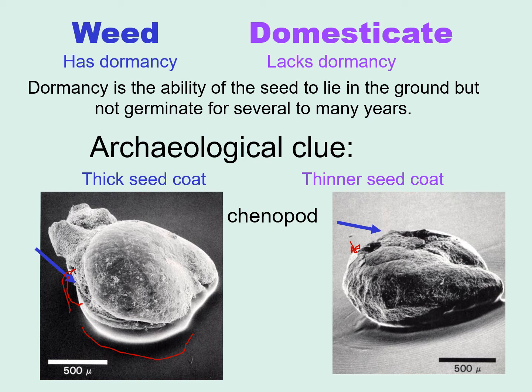You might also ask why these seeds look so different. It turns out that in chenopodium seeds, the embryo develops after the seed coat develops. On the left, the thick seed coat constricted the embryo and gave the seed what we call a biconvex shape. Whereas on the right, the seed coat did not restrict the shape of the embryo and we end up with a truncate margin seed.